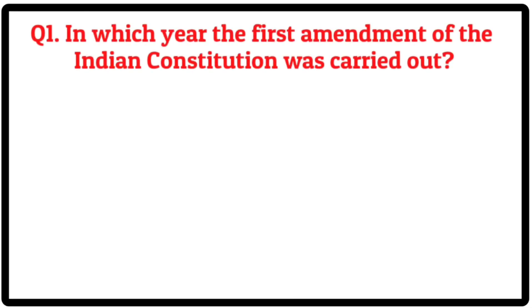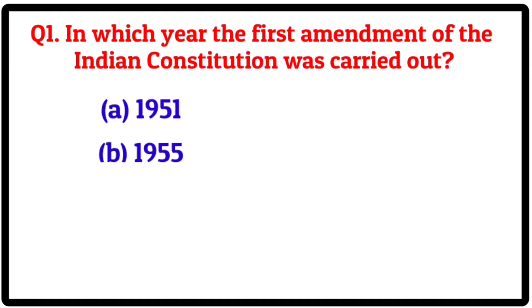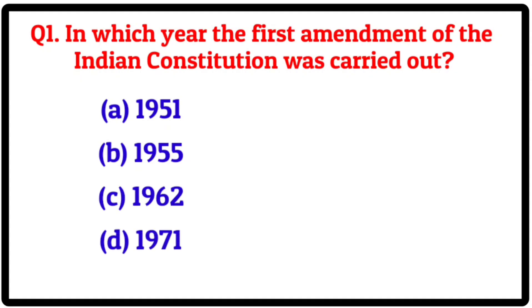Question 1. In which year was the First Amendment of the Indian Constitution carried out? Option A: 1951. B: 1955. C: 1962. D: 1971.